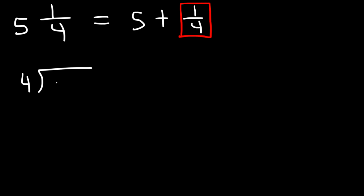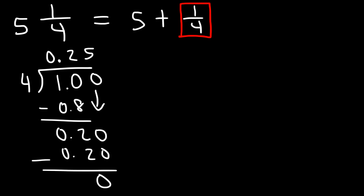So let's use long division. 4 goes into 1 zero times. So we need to add a decimal. Now how many times does 4 go into 10? 4 goes into 10 two times. 4 times 2 is 8. So 4 times 0.2 must be 0.8. 1 minus 0.8 is 0.2.